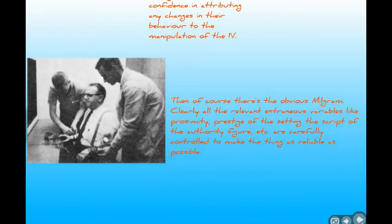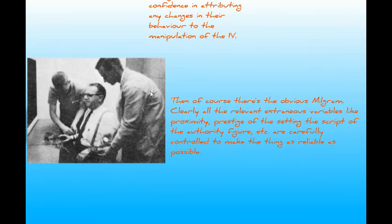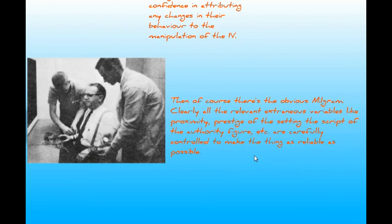Another tightly controlled series is the Milgram obedience experiments. All relevant extraneous variables were controlled: the proximity between the subject and the stooge, the prestige of the setting, whether it looked like a genuine office or part of a university, the script the authority figure used, and whether the authority figure was present or giving instructions over the phone or loudspeaker. Milgram manipulated each of these in turn, producing a sophisticated set of results specifying clearly how each influenced obedience behaviours.